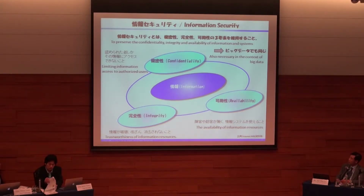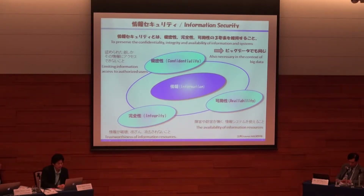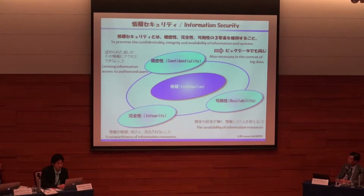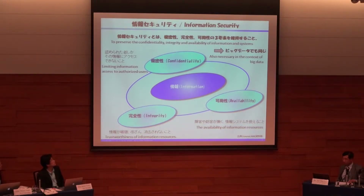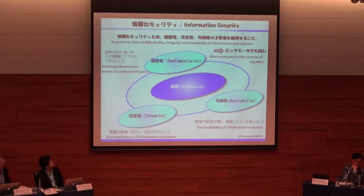Firstly, I'd like to talk about the definition of information security. I'm going to use the word information security from a rather technical point of view. I'm not talking about information security policy or cyber security policy, but I'd like to talk about information security from the point of technical work. Information security is to preserve the confidentiality, integrity, and availability of information systems.